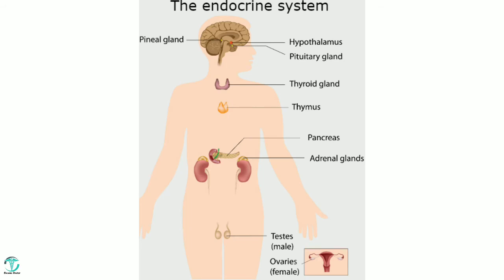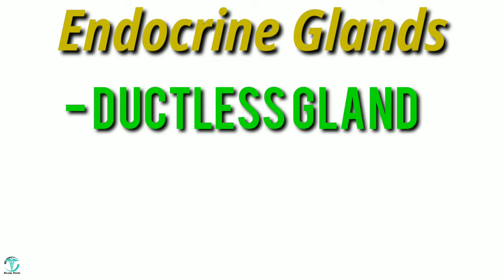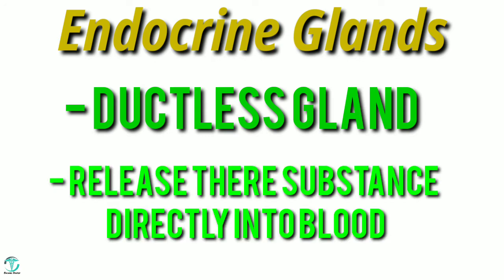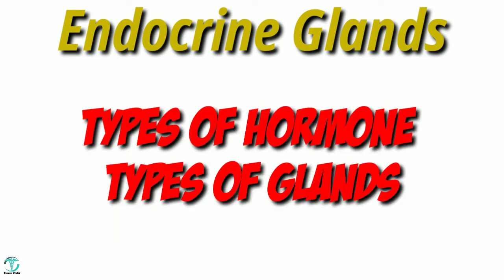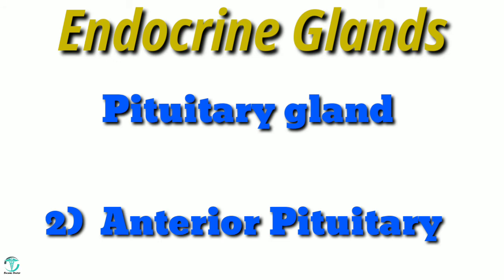We will study about hormones secreted by glands like hypothalamus, pituitary gland, anterior pituitary, and posterior pituitary. Endocrine glands are glands which do not have a duct — they are ductless glands — which release their substances directly into the blood. We will study the different endocrine glands and the hormones secreted by them.